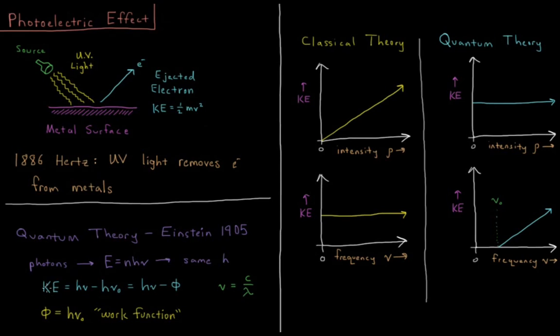The kinetic energy of the electron, under Einstein's hypothesis, is the energy of the photon, hν, minus some barrier or initial energy, hν₀. This quantity hν₀ is called the work function—how much energy it takes to get an electron ejected from the metal at all. If your photon doesn't have enough energy, if its energy isn't greater than the work function, then you don't get to eject an electron at all.